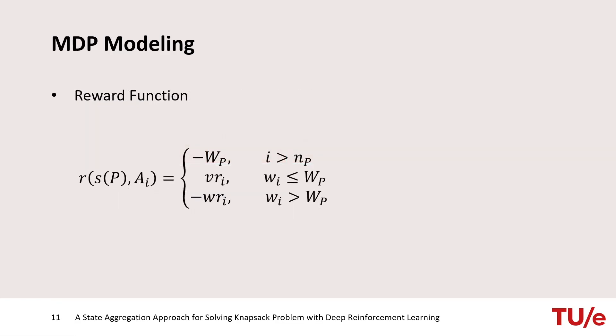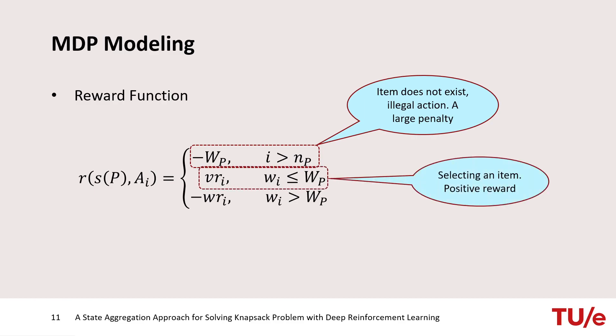Reward is defined based on three different cases. When the item does not exist, probably because it's already selected and removed from the problem, the reward is a large negative value to penalize these actions. If the item can be added to the solution, the reward is positive. And if the weight of the selected item is larger than the capacity, another negative value is considered as penalty.